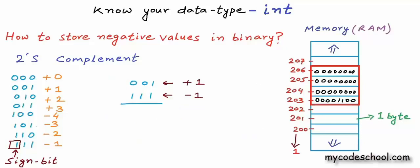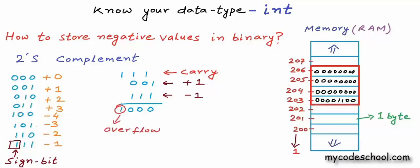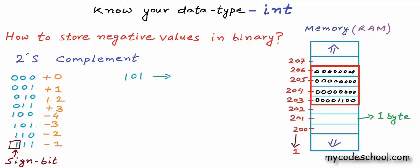For example, adding 001 (plus 1) and 111 (minus 1) in 2's complement: 1 plus 1 gives 0 with carry 1, and this carry propagates. The actual result would be 1000, but since we only have 3 bits, the leftmost 1 overflows and we're left with 000, which is 0, as expected. In 2's complement, to revert the sign of a binary number, find its 2's complement — so 101 is the 2's complement of 011, and 011 is the 2's complement of 101.